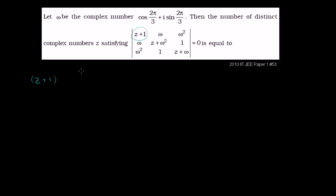Let's evaluate the determinant. Starting with the first term up here, it's going to be this term times the determinant of the sub 2×2 matrix. So it's going to be z plus 1 times the sub 2×2 determinant — that's the z plus 1 factor.